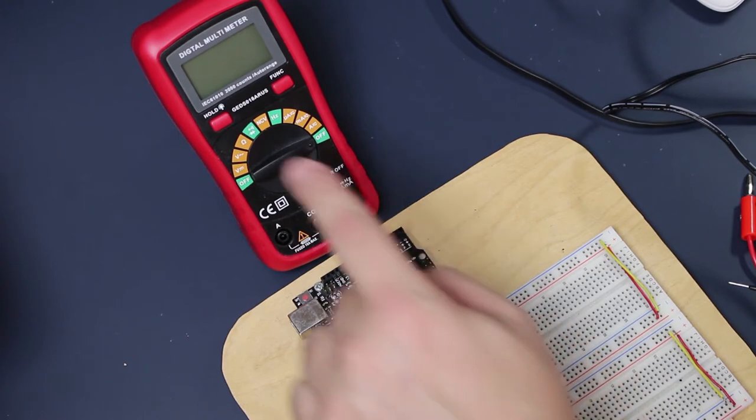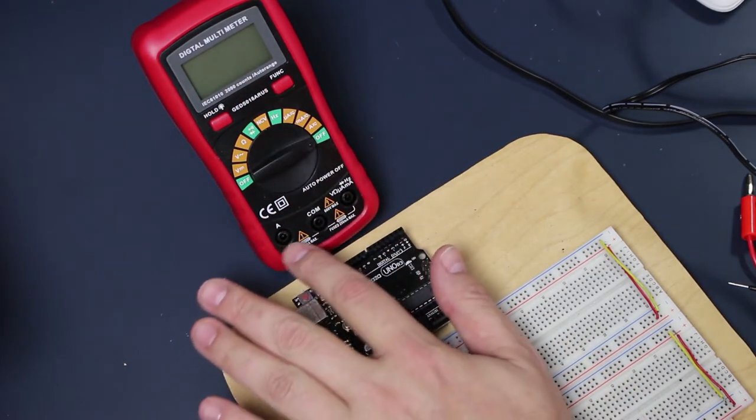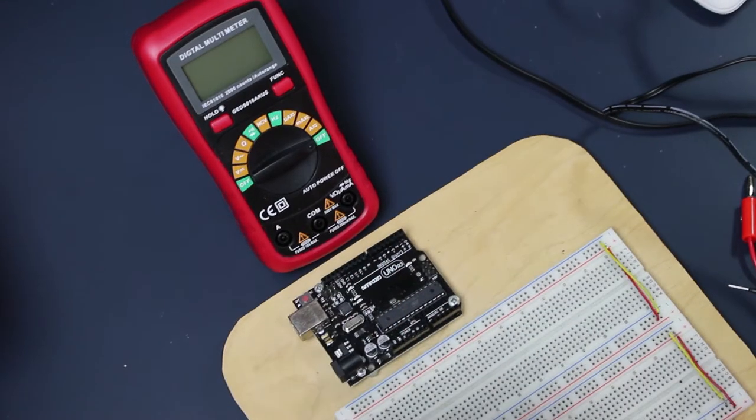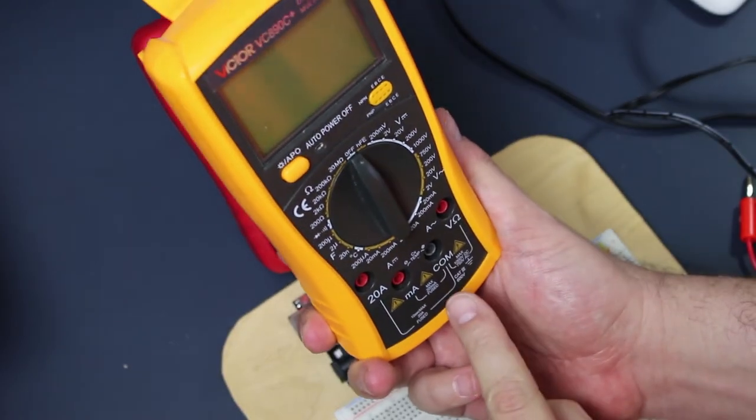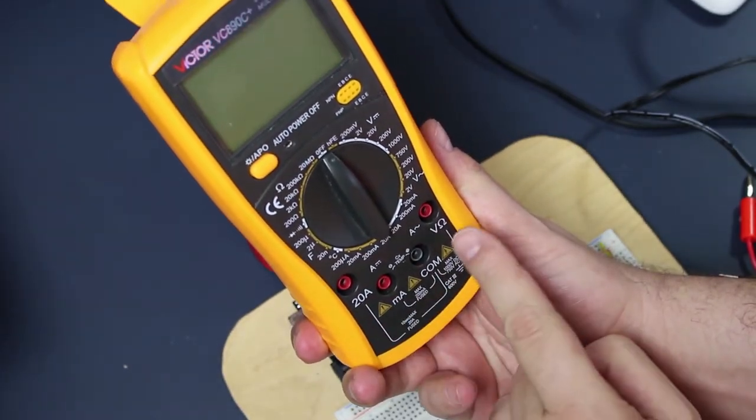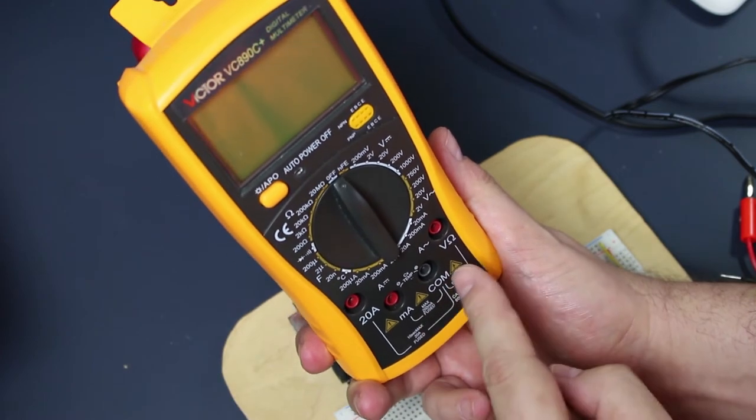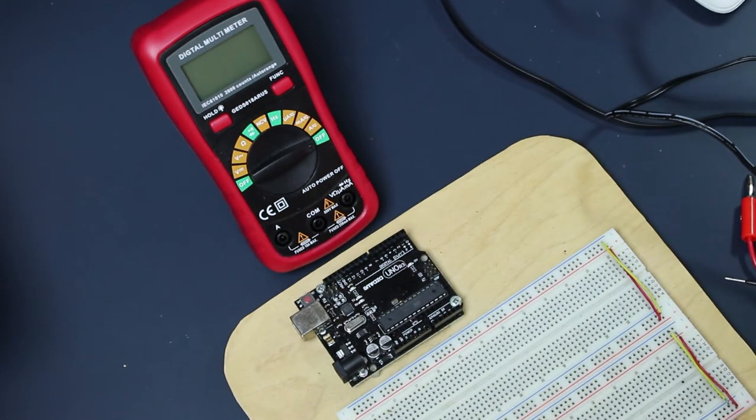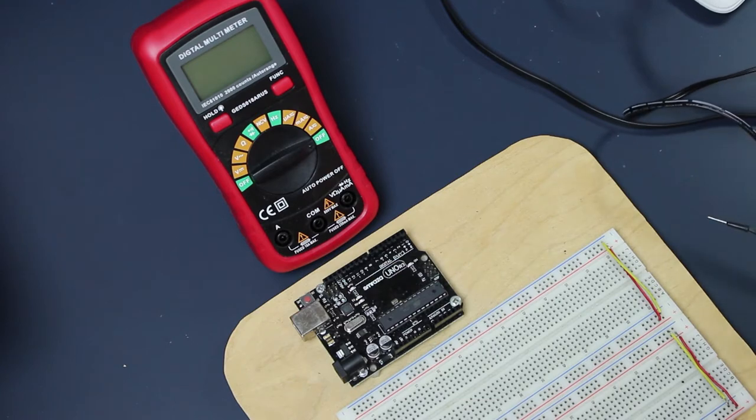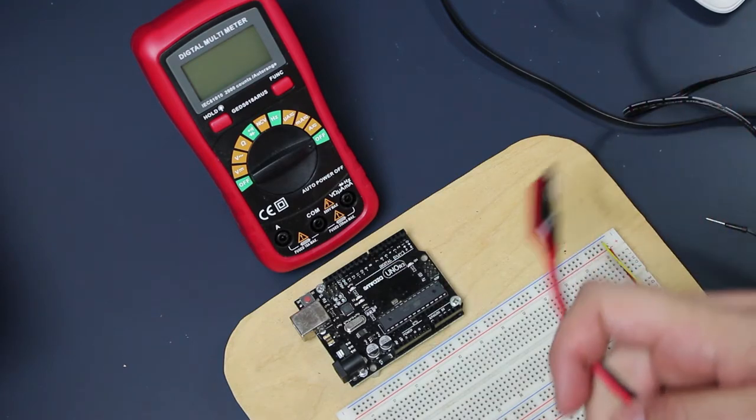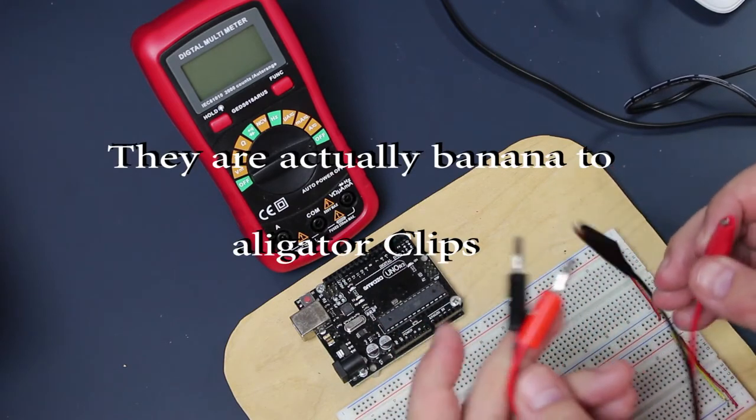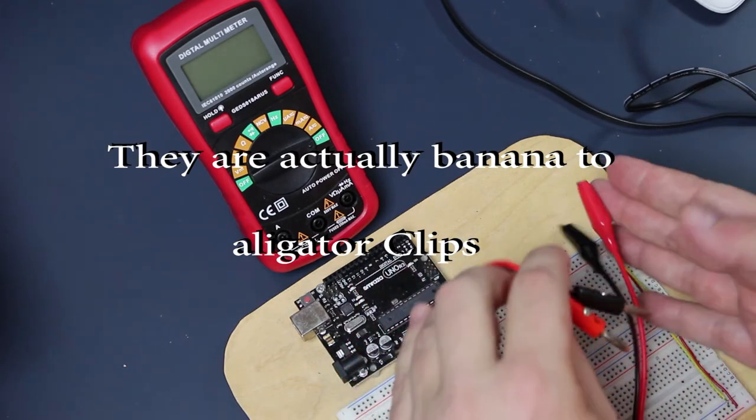Then the next thing we're going to need is a multimeter. This thing here. If you notice, it has three ports. Some multimeters like this one over here have four ports. It doesn't matter, but your multimeter needs to be able to remove the probes and you need to have these ports to plug them in. The next thing you're going to need is, of course, the probes themselves. These are banana clip probes and it will become clear in a second, red and black.